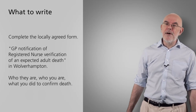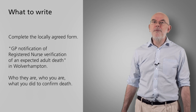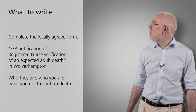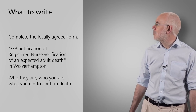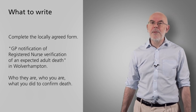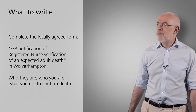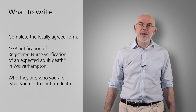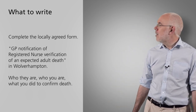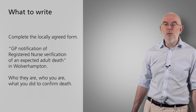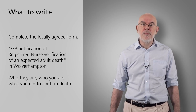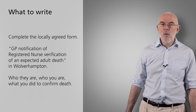Once you've finished the practical examination, you move on to the paperwork. Complete the locally agreed form. In Wolverhampton we have the GP notification of registered nurse verification of an expected adult death, but you'll have a local form wherever you work. At the very least, record who the person is with identification such as date of birth and NHS number, who you are and your grade, and what you did to verify the death. You may have a pre-filled or electronic form uploadable to your computer system.